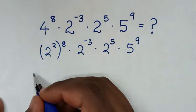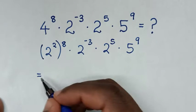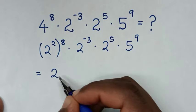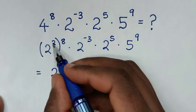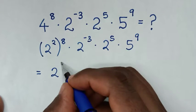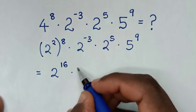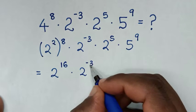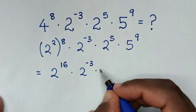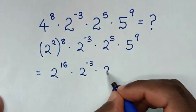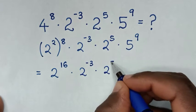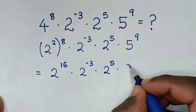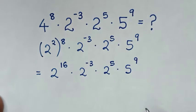Then in the next step, from this exponent of 4 power of 8, we make the base of 4 have the same base of 2. So 4 is the same as 2 power of 2, bracket power of 8, times 2 power of negative 3, times 2 power of 5, times 5 power of 9. It will be equal to 2 power of 16, times 2 power of negative 3, times 2 power of 5, times 5 power of 9.